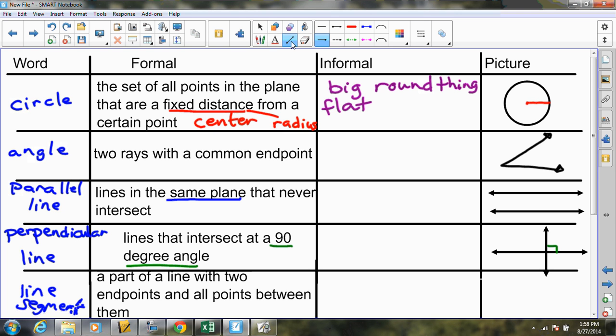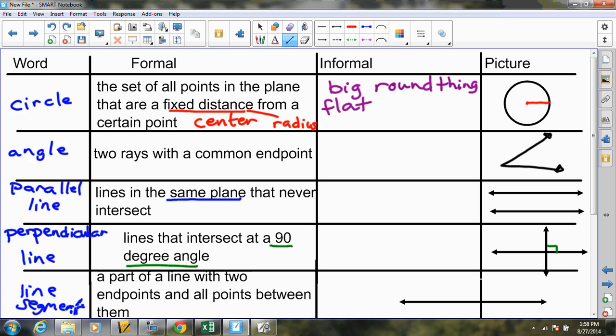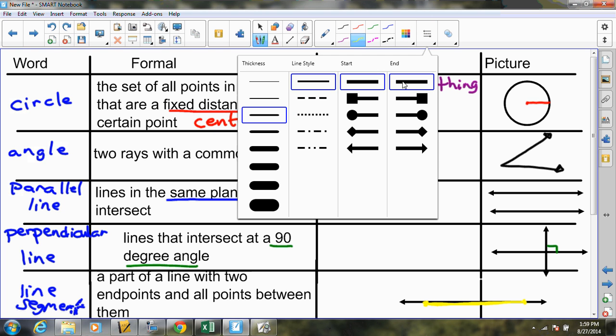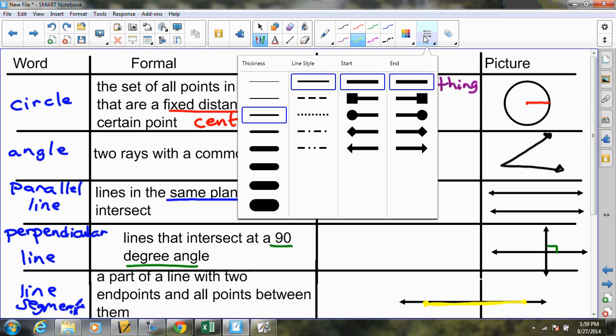The last vocabulary word is a line segment. Well, we'd already noted this is a line. Well, to be a line segment, we need to have two endpoints. So, I'll pick an endpoint. My orientation must not be quite right. We have one and two endpoints. So, part of the line with two endpoints and all the points in between them. Basically, we're just filling it in. That's a line segment. Easily drawn because they look like this.